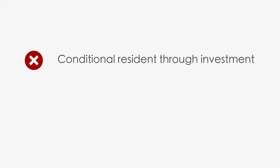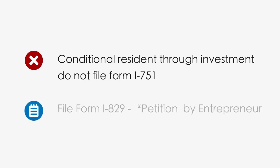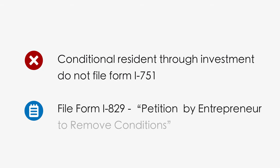Conditional residents that obtain status through a financial investment in a U.S. business should not use this form. Instead, they must use Form I-829, a petition by entrepreneur to remove conditions.